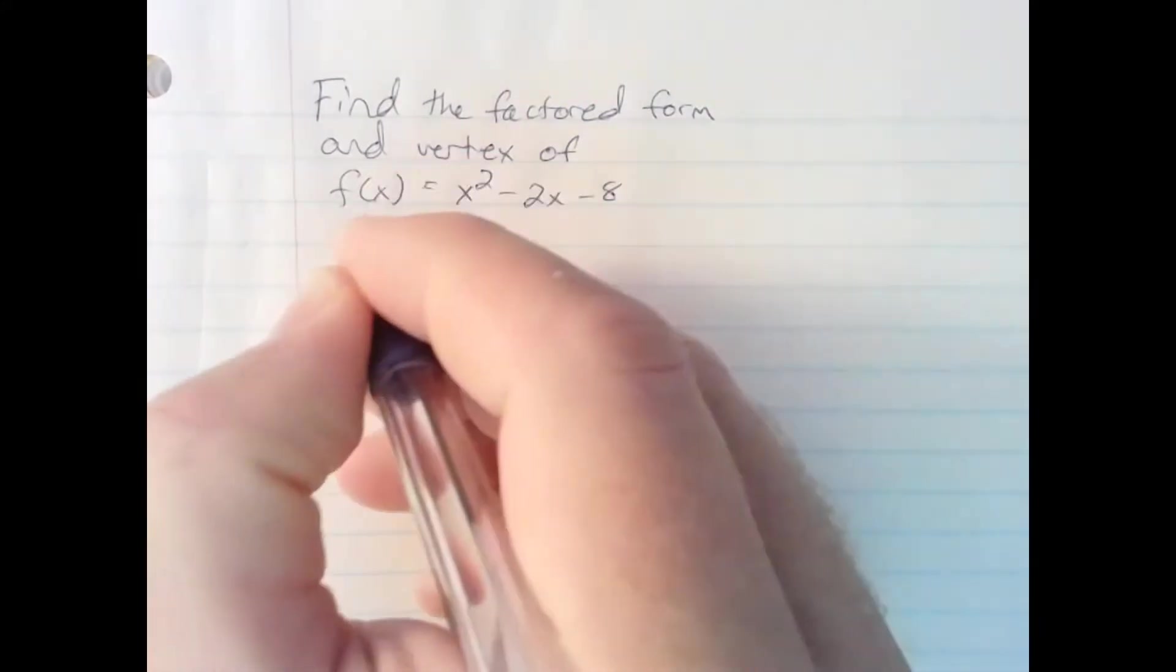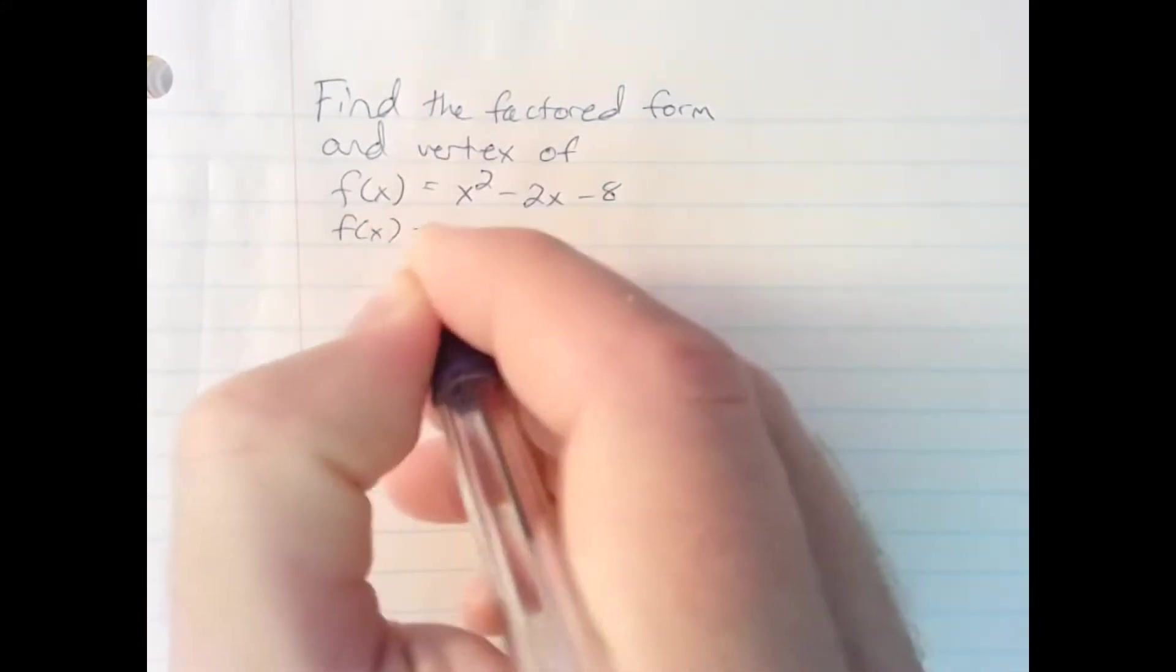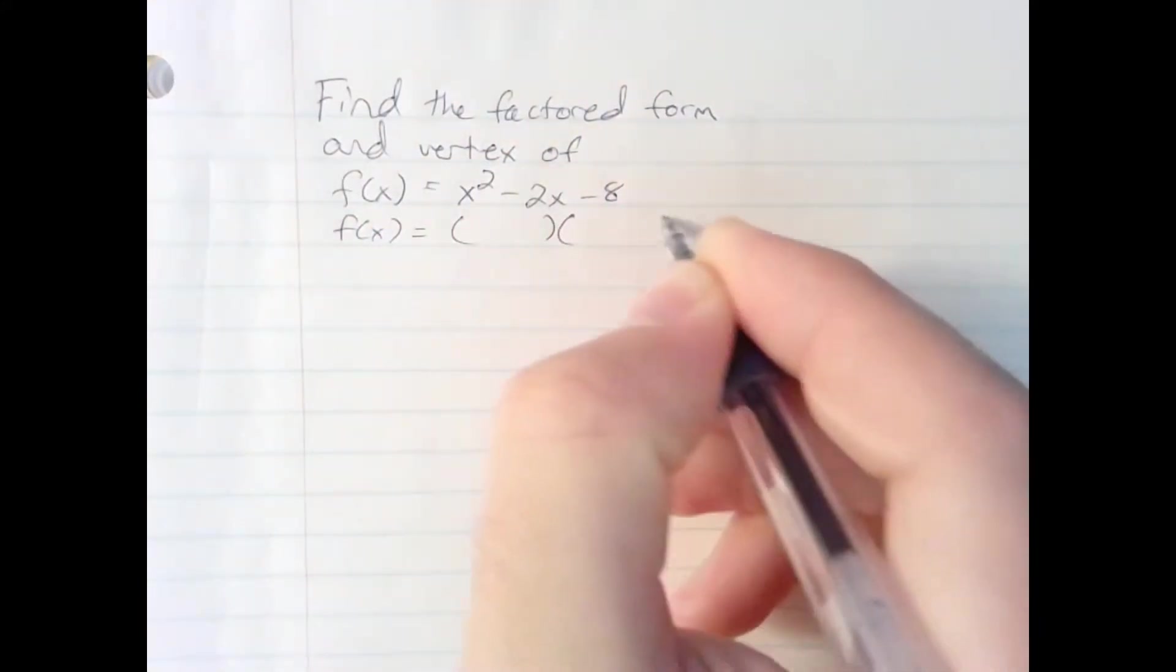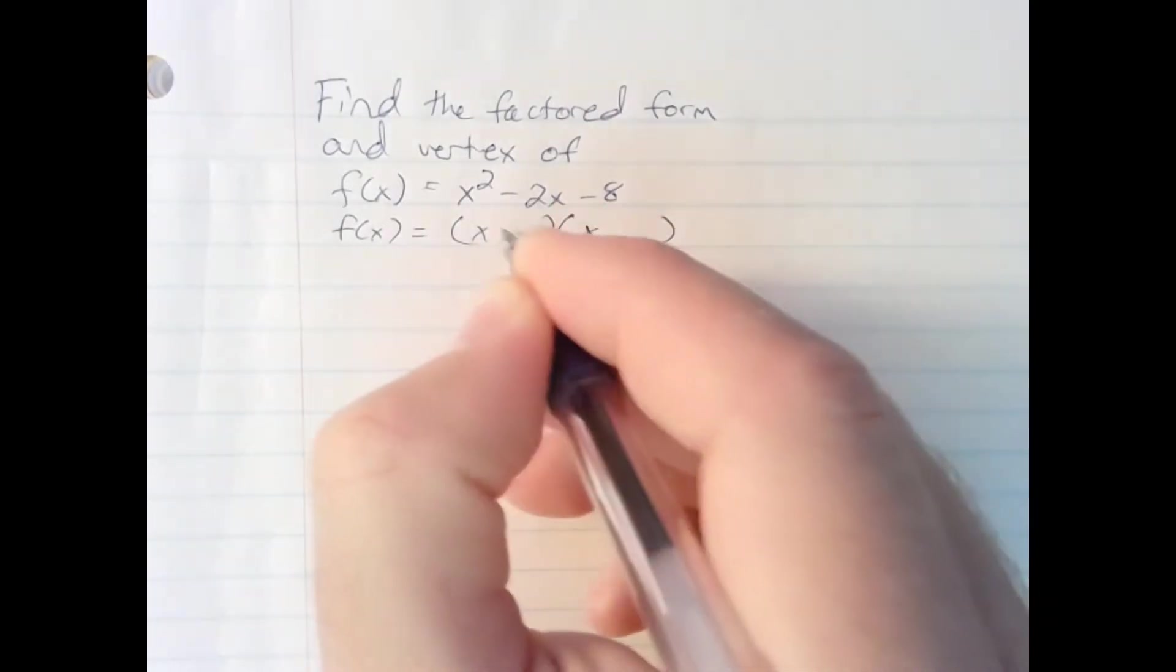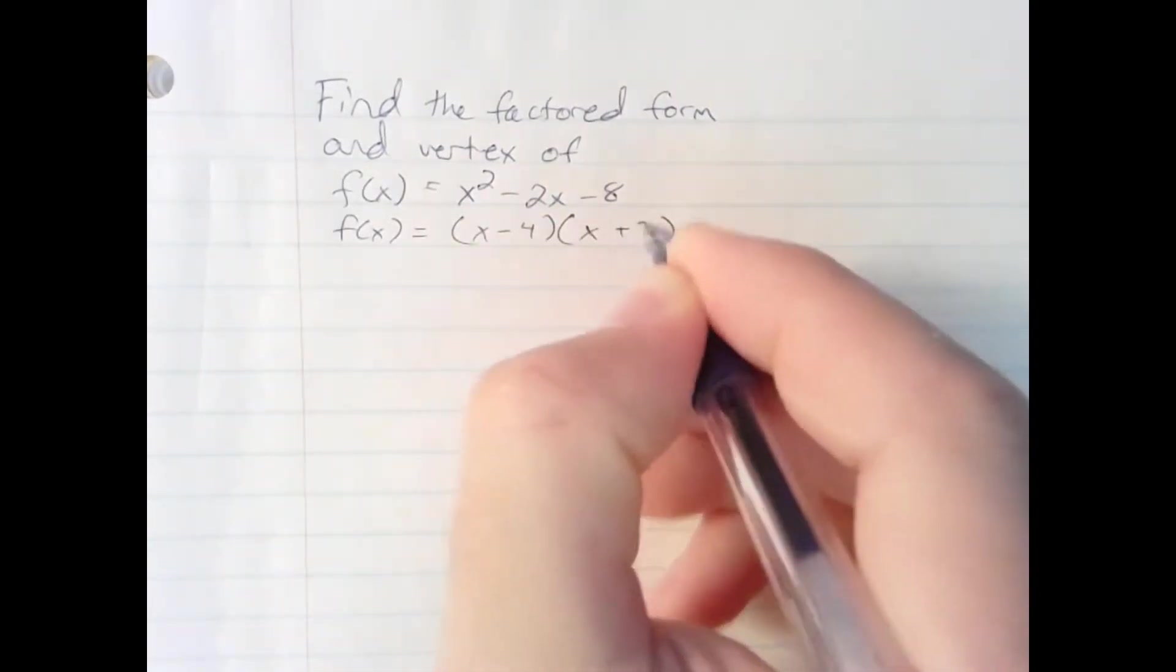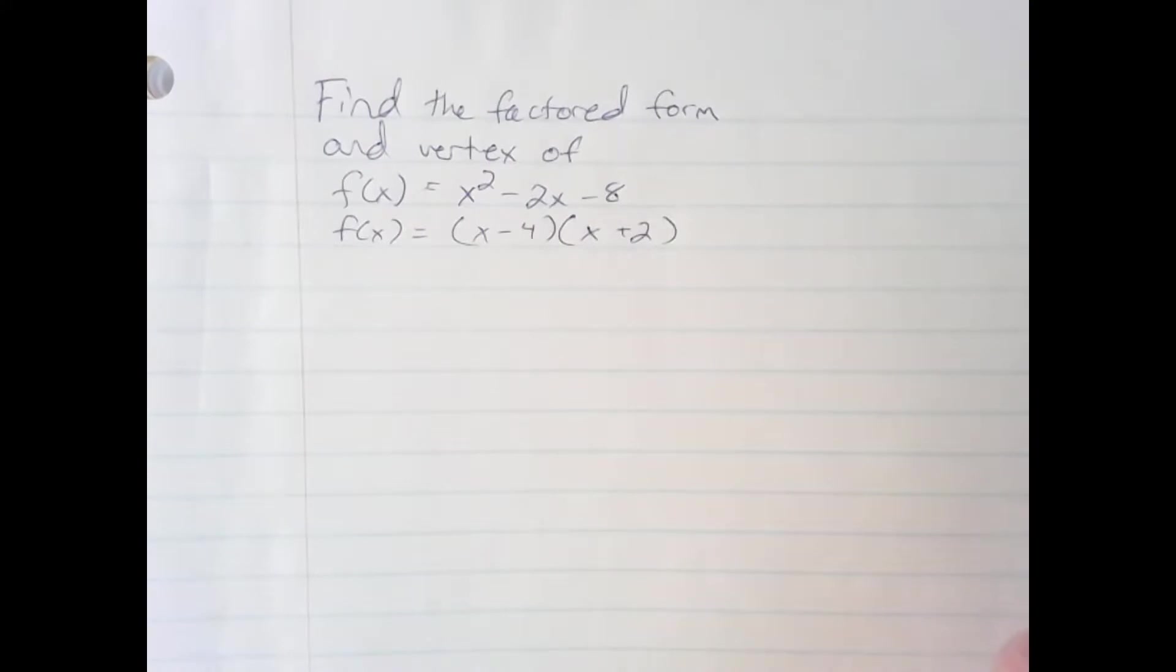Factored form is pretty easy. We ask ourselves what factors of negative 8 add up to negative 2. Minus 4 and plus 2 do, and that is the factored form.